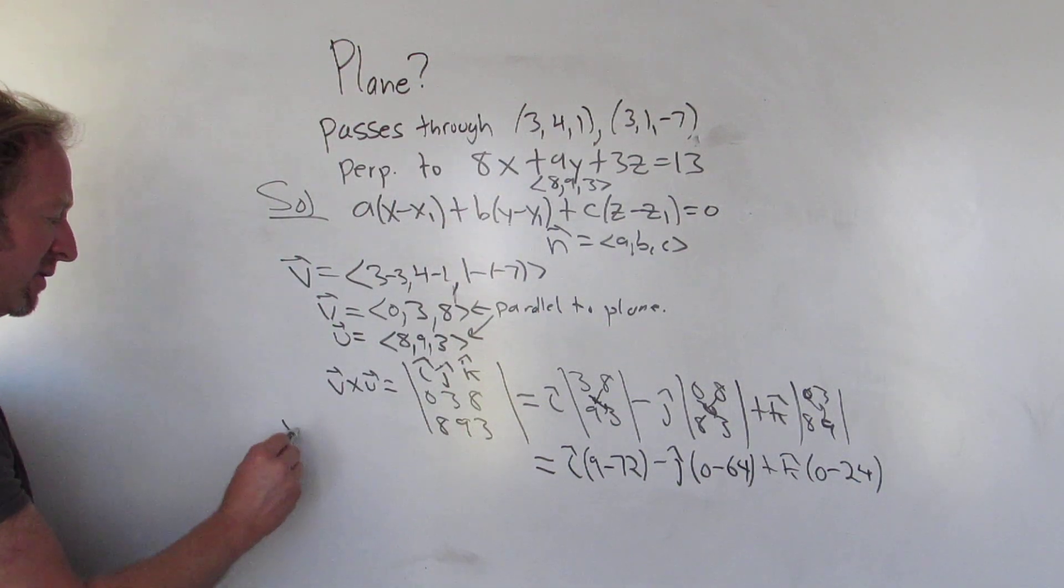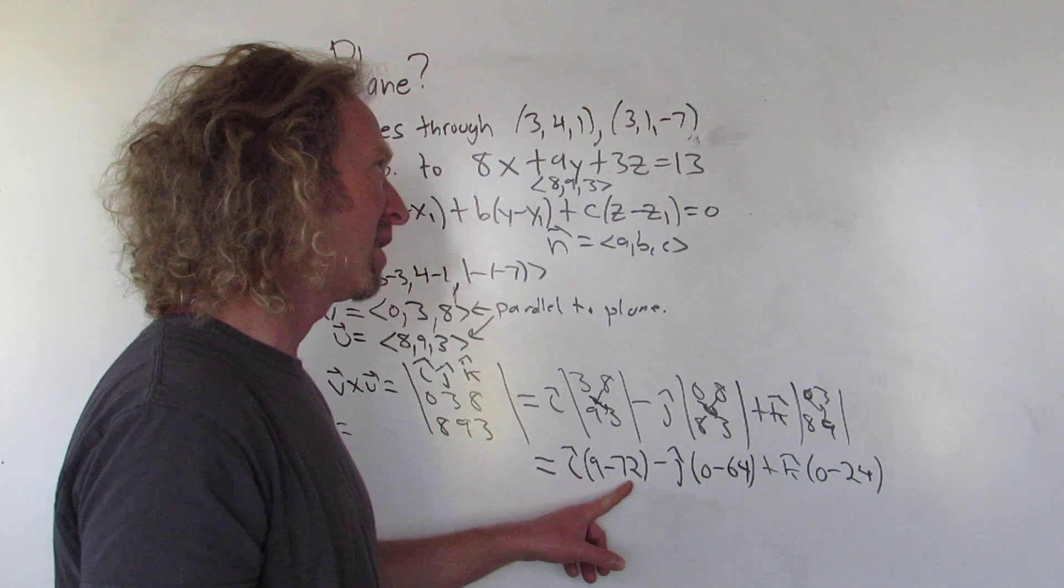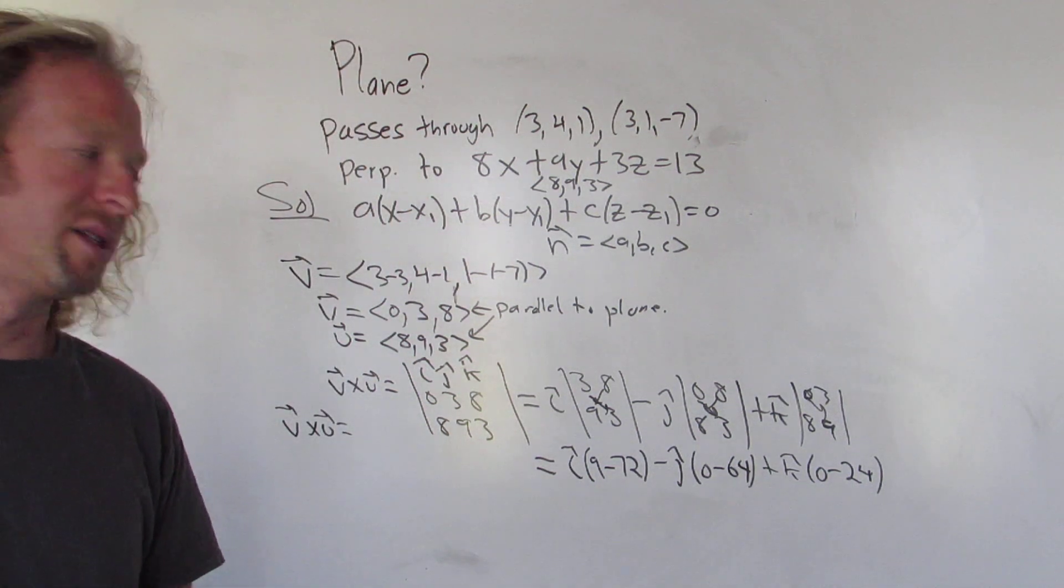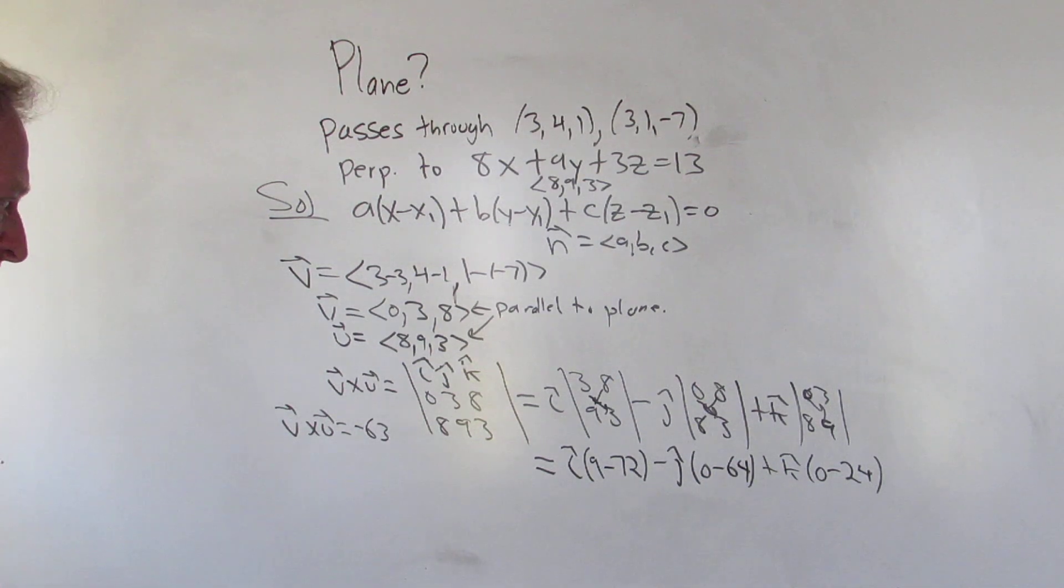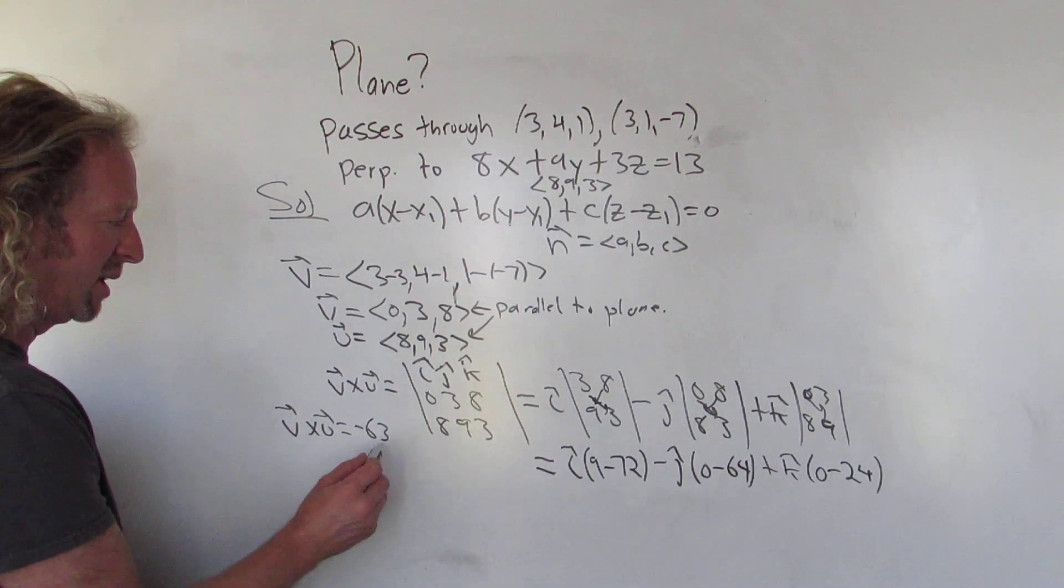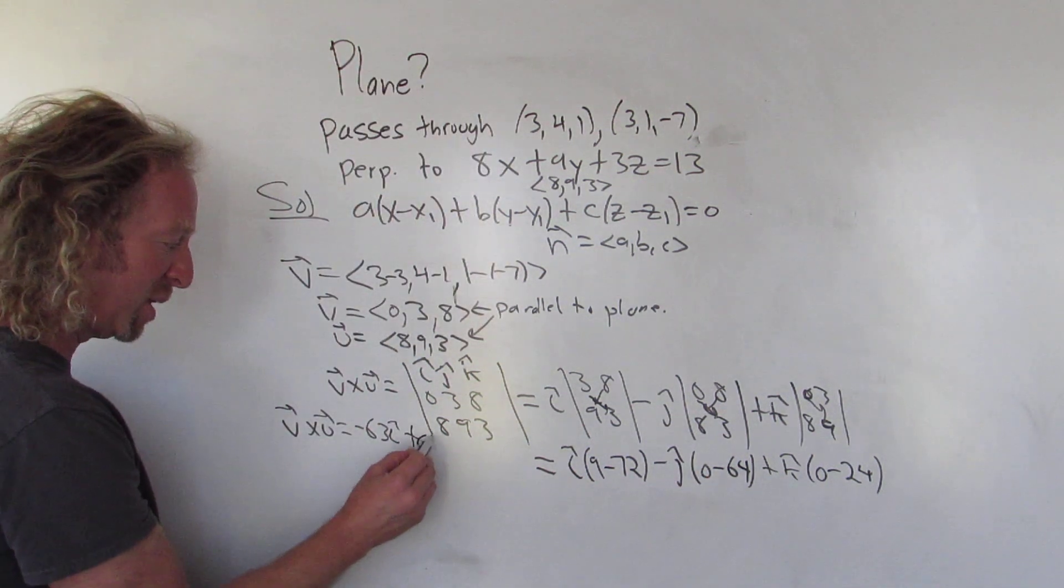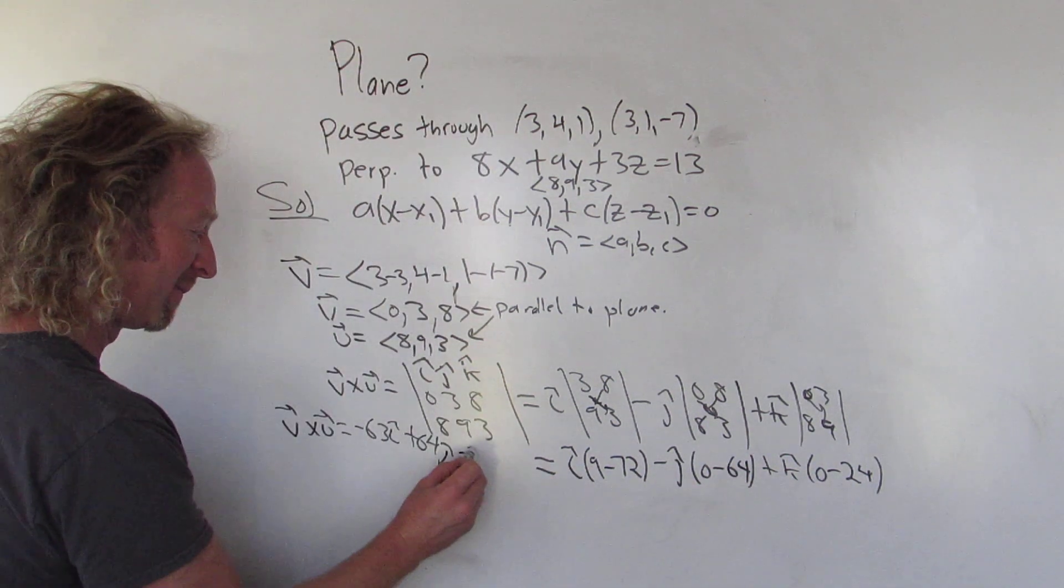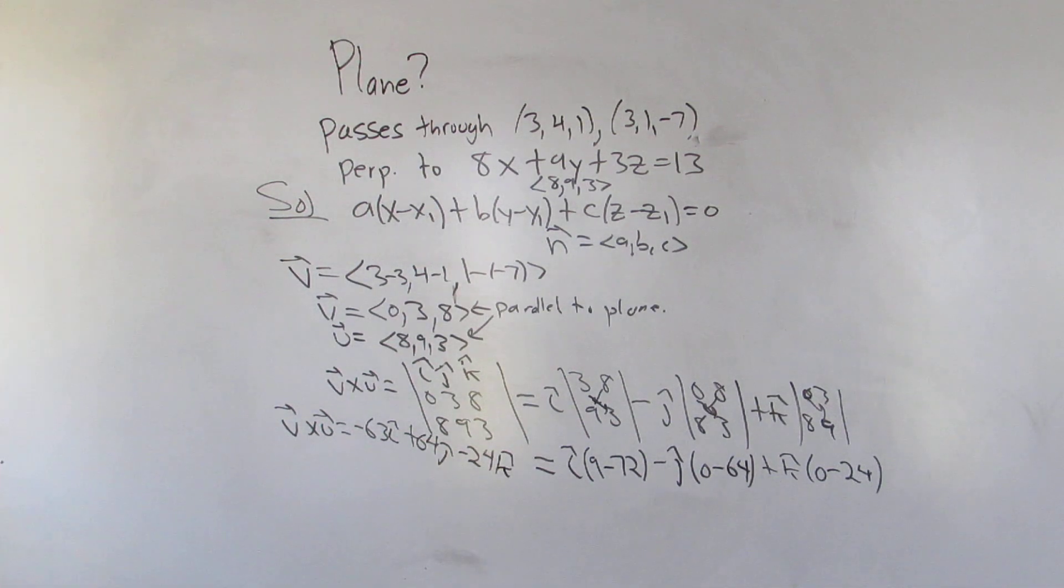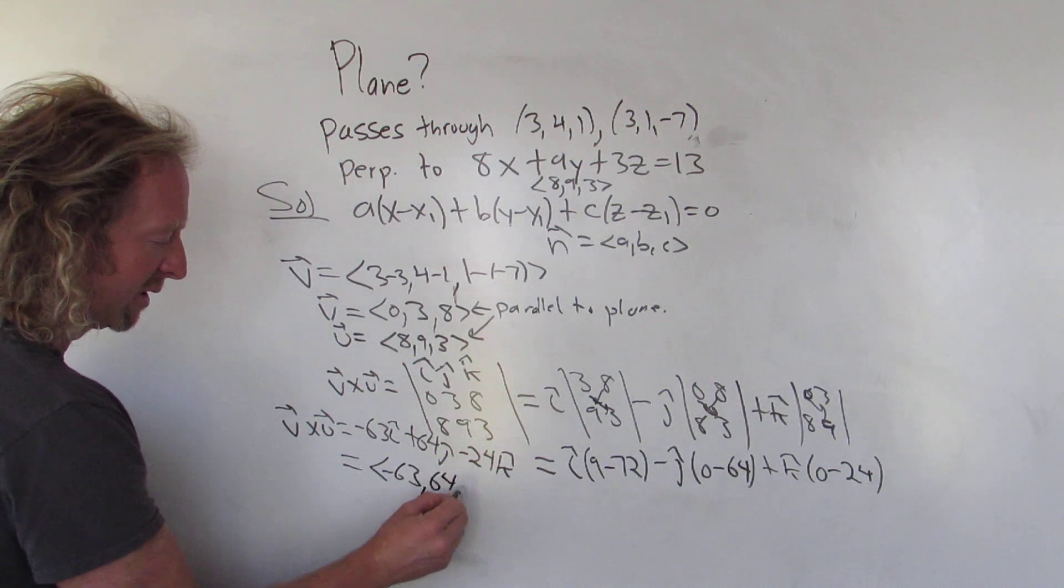So I'm going to write it again over here. So v cross u. So let's see. 9 minus 72, that's going to be negative 63. Negative 63 i hat. Plus 64 j hat. Big numbers. Feels really wrong. But hopefully it's not. Minus 24 k hat.